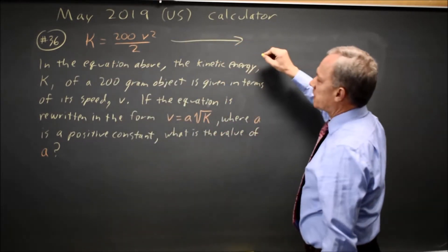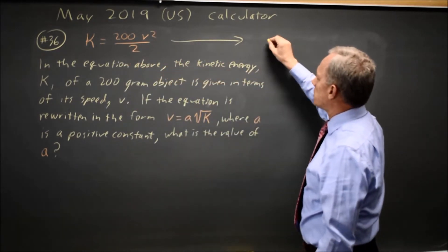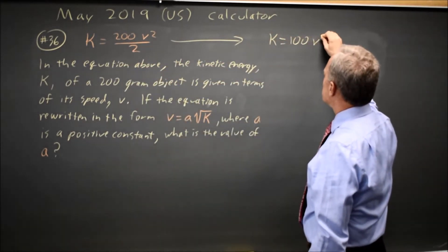So I'm going to rewrite it. 200 over 2 is 100. K equals 100 V squared.